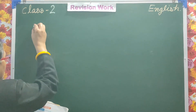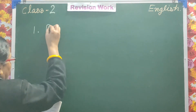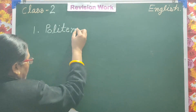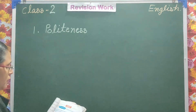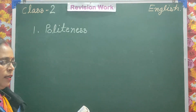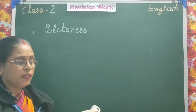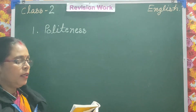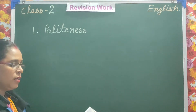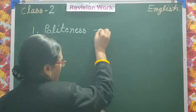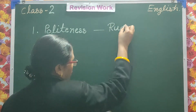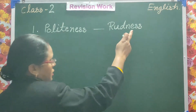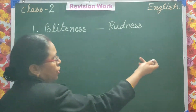Your first word is 'politeness.' This word means good manners. And its opposite meaning is 'rudeness' — R-U-D-N-E-S-S. So politeness, its opposite is rudeness.